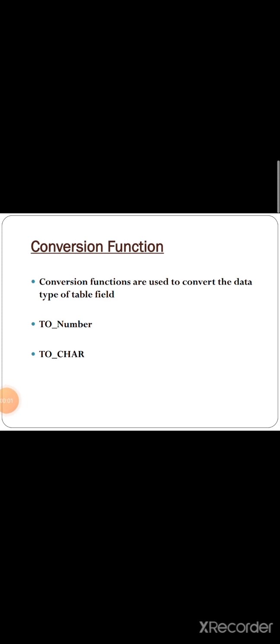Welcome back everyone. Today in this class we shall see the remaining classifications of SQL functions. The first one is the conversion function. Conversion functions are used to convert the data type from one type to another type. It has some classifications: first one is TO_NUMBER, and second one is TO_CHAR. These two are the conversion functions and we shall see them one by one in detail.